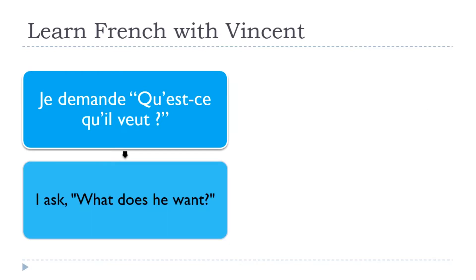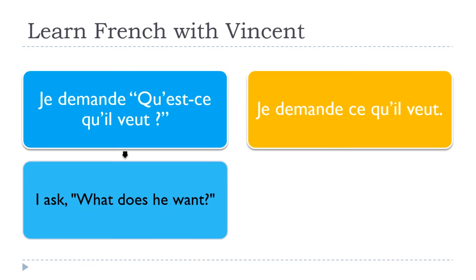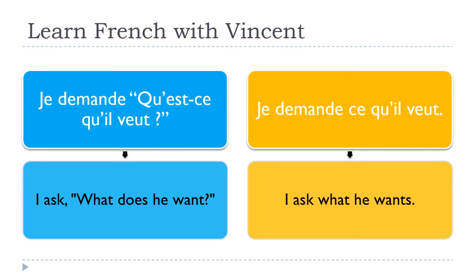Another example: 'qu'est-ce qu'il veut?' — I'm asking what does he want. We do exactly the same thing with the same logic. We start with 'je demande,' and instead of 'qu'est-ce que,' we use 'ce que.' Notice that because there's a vowel after — 'il' — the 'e' disappears and we add an apostrophe: 'je demande ce qu'il veut.' I ask what he wants.